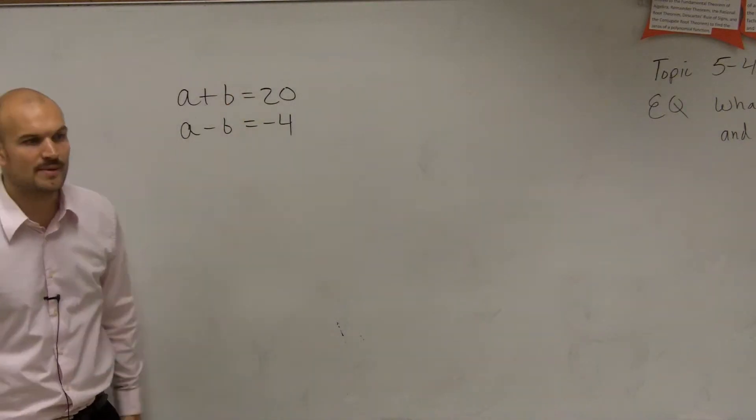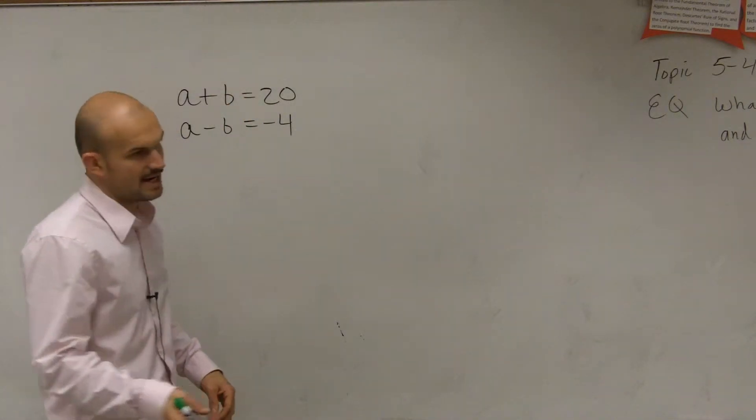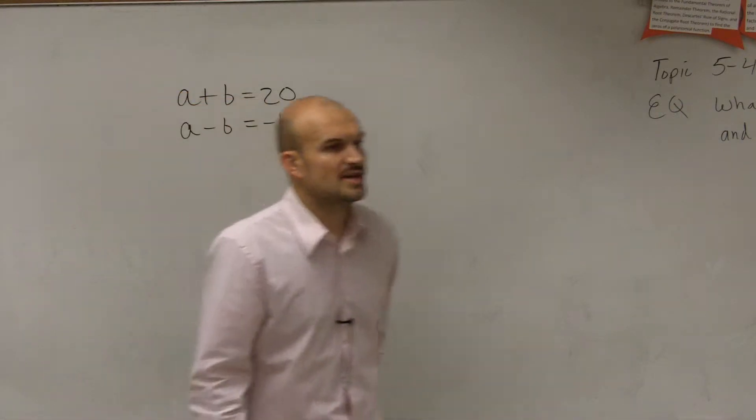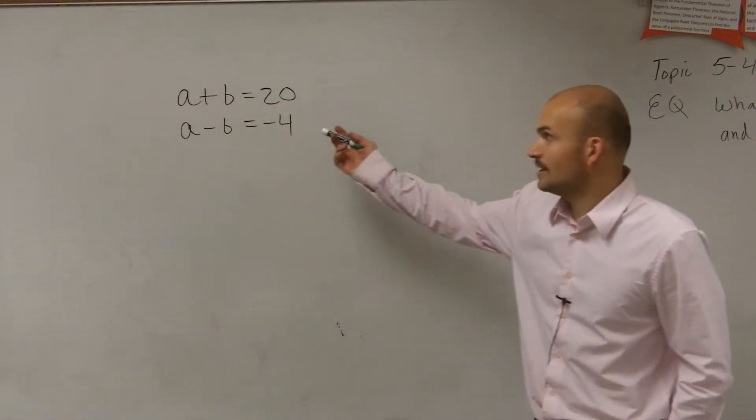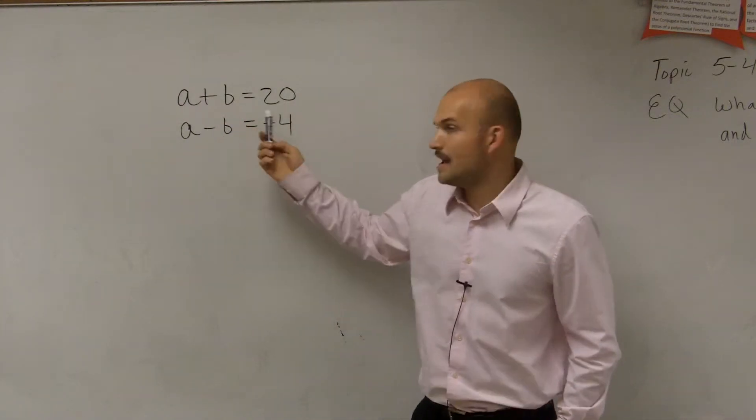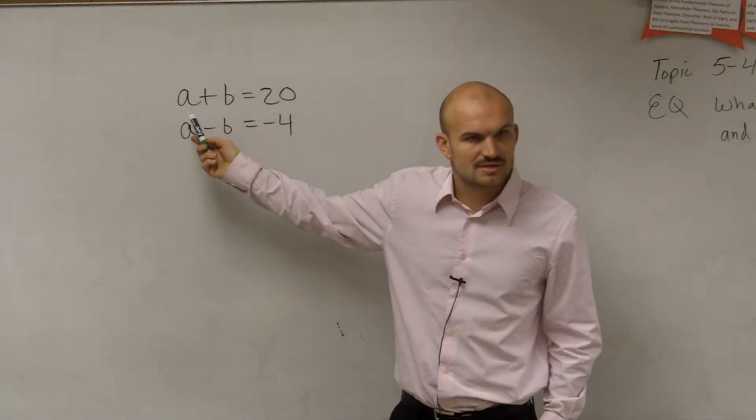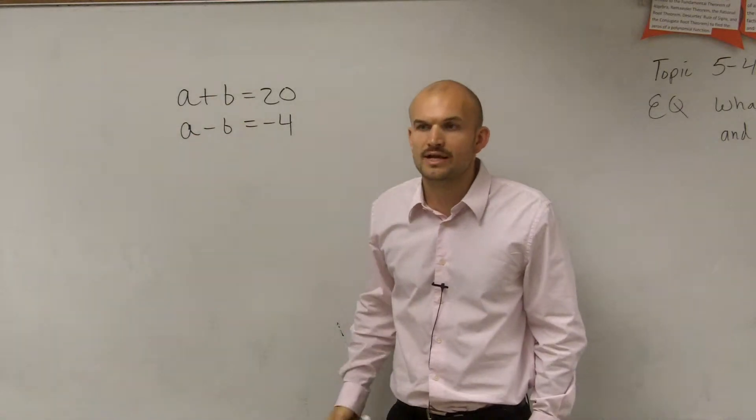So what I need to do is I need to choose one of my variables. I have two a's and I have two b's up there, but I need to choose a variable that has a 1 as a coefficient to solve for. So we look up here and we actually got some pickings, right? Every single one of these variables has a coefficient of 1 or negative 1.